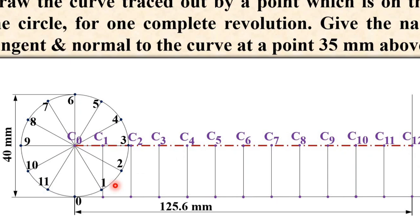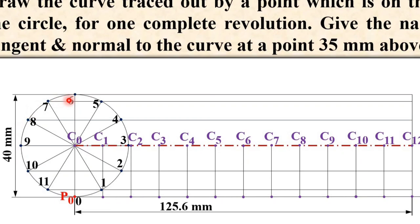Next, draw the horizontal line passing through all the points on the circumference of the circle. As discussed, we assumed the initial point on the circumference is here — that is why it is P0.